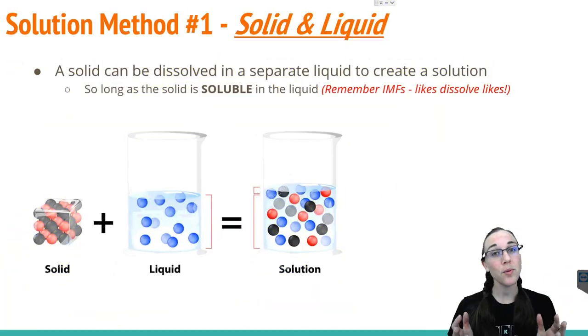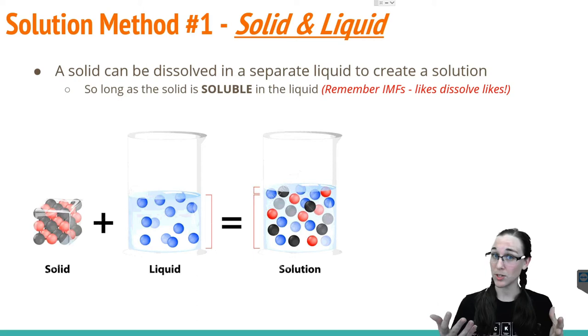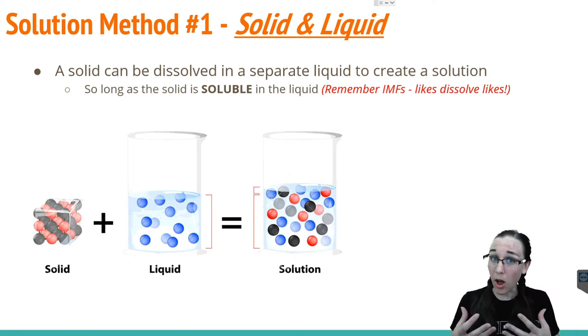There are two ways that a solution can be made. The first method, as we just saw in the lab, is dissolving a solid and a liquid together. As long as the solid chemical is soluble, i.e. it dissolves in the solvent you're trying to dissolve it in, you can create a solution out of a solid and a liquid.